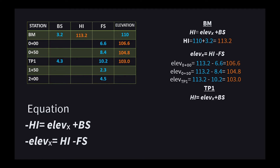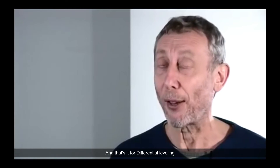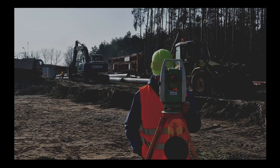Proceeding to TP1: using the HI equation, the elevation for TP1 is 103.0. Note that we will no longer use the benchmark elevation, as each turning point will have a new elevation. HI equals elevation 103.0 plus backsight 4.3, giving a new HI of 107.3. At station 1+50, HI is 107.3 minus foresight of 2.3, equals 105.0. Lastly, at station 2+00, HI is 107.3 minus foresight of 4.5, giving 102.8. And that's how you compute with respect to differential leveling.